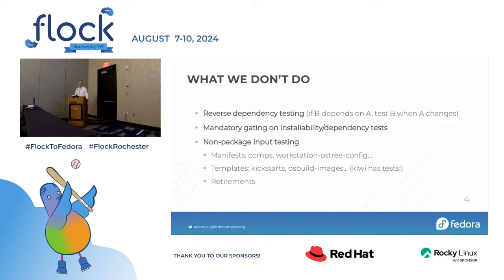Gating for the generic CI tests and per-package CI tests is optional — you don't have to have your package gated, and it would be much better if we could require packages to pass installability tests before getting in. Non-package input testing is another huge gap. It's not just packages that go into what we ship as Fedora. There are tons of non-package inputs. We have comps, which defines package groups — like the group of packages making up GNOME or KDE. When you change comps, we have a few sanity tests, but there's no test for whether it will break building images. We just merge it and do a compose and see if it works — 1990s-style software development.